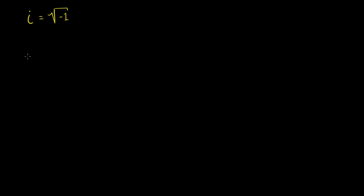They will tell you to start with negative 1. We know from definition that negative 1 is equal to i times i. Everything seems pretty straightforward. And then they'll say, if you assume this, we can replace each of these i's with the square root of negative 1. And they'd be right.